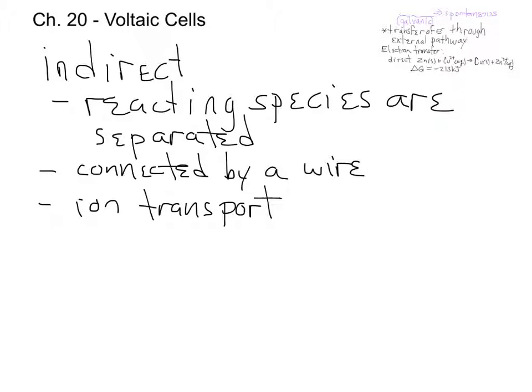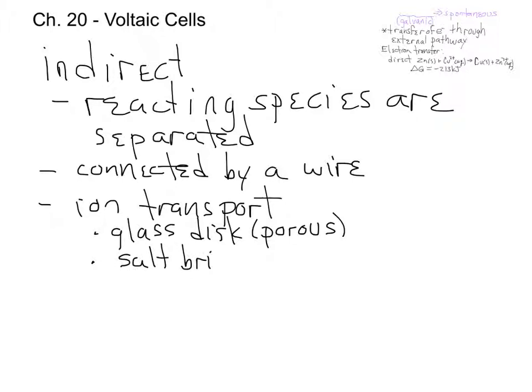This ion transport can be either a glass disk that is porous, or it can be what we call a salt bridge. In lab at the end of the semester, you're going to do an electrochemistry lab and essentially use a type of salt bridge. The pictures I'm going to draw will involve more of this porous glass disk. That porous glass disk allows ions to move back and forth, but it does not allow the solvent to move back and forth — only the movement of the ions through the glass disk.